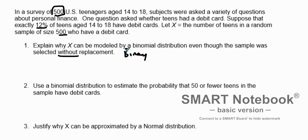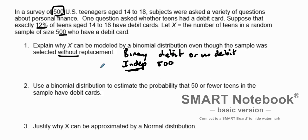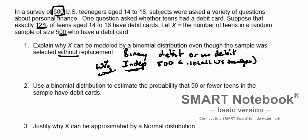For binomial, we need binary outcomes — either has a debit card or no debit card. We also need independence. Since our sample size is 500, we use the 10% condition: 500 is less than 10% of all US teenagers. There are a lot of US teenagers, and 10% of them is definitely greater than 500, so this would be independent by the 10% rule. We also have a fixed number of trials, 500, and the same probability — 12%, so p = 0.12.